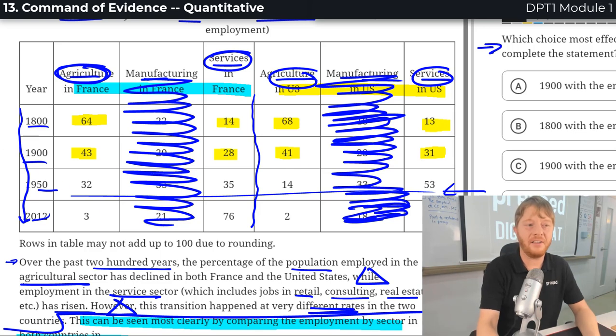And here's where things start to get a bit different. Now it looks a bit half and half in France. Whereas in the States, it's definitely a strong push towards services in 1950. And then in modern times or somewhat modern times here, 2012, definitely way more services than farming in both countries.